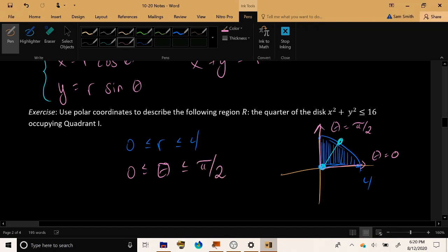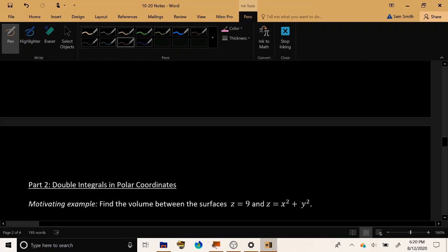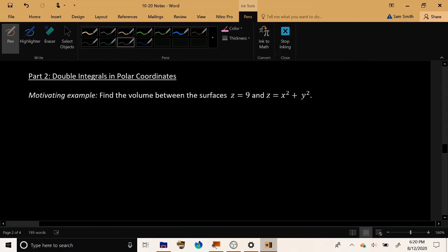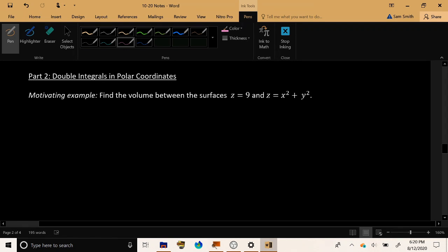Just a quick review of polar coordinates as used to describe regions in two dimensions. Now let's get to the good stuff. Suppose that we wanted to rewrite the following integral to find the volume between the surfaces z equals 9 and z equals x squared plus y squared.